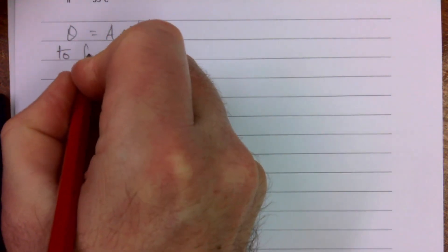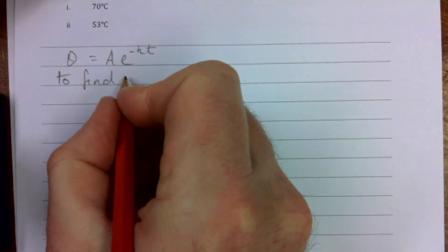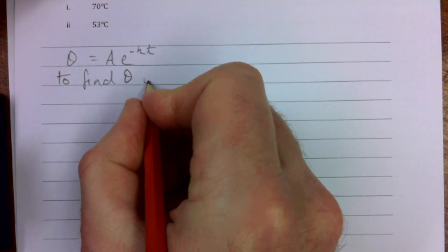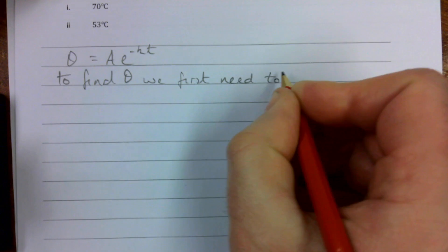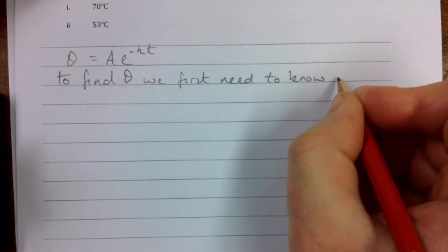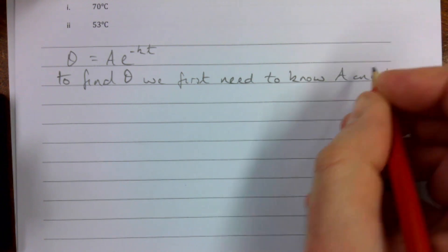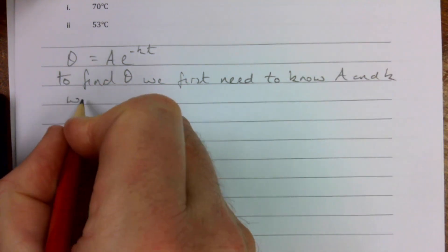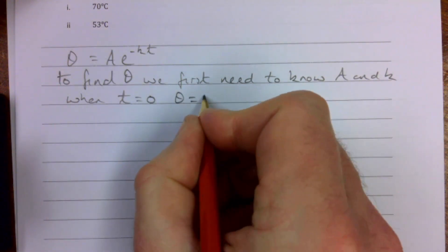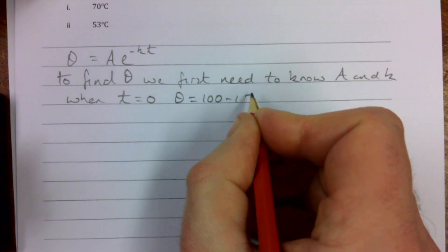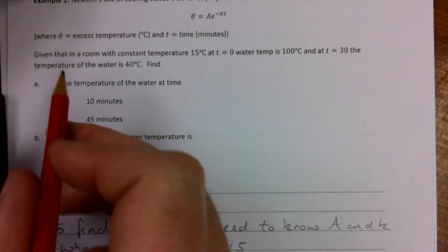So we have θ = Ae^(-kt). To find θ, we first need to know A and K. So we know that when t = 0, θ is 100 - 15. So what am I doing there? What they've said is excess temperature.